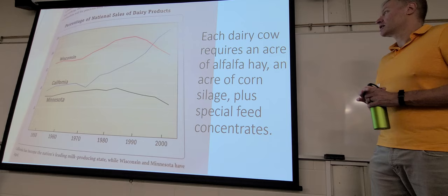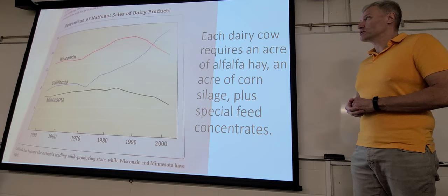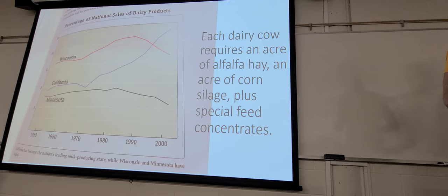Each dairy cow requires an acre of alfalfa hay, an acre of corn silage, plus special feed concentrates. This little graph here is from our book, and as you can see in it, Minnesota is doing better than Minnesota in absolute terms, but California has really eclipsed Wisconsin as being one of the main producers.